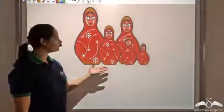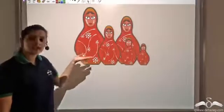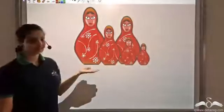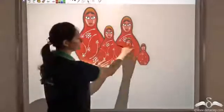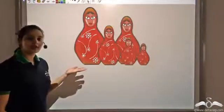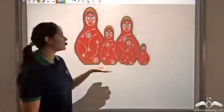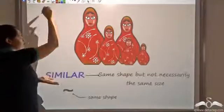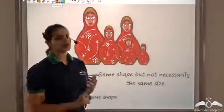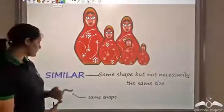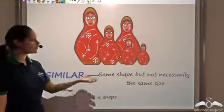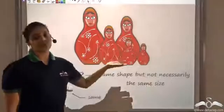Look at this picture. Each figure, or each doll, looks exactly the same as the other — the only difference being the size. So in geometry, when we have such a case, we call this similarity. We use the word 'similar' to indicate same shape but not necessarily the same size, and this is indicated by an inverted S. So I can say that each figure here is similar to the other.